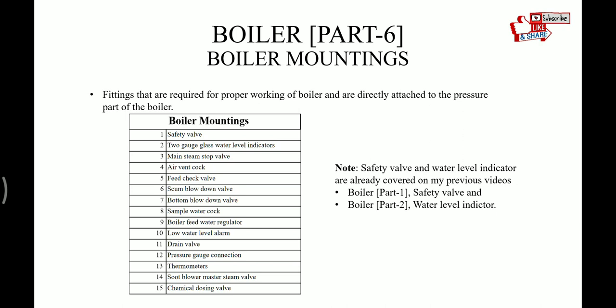Boiler mountings which are mounted on the boiler are safety valve, gauge glass water level indicator, main steam stop valve, air vent cock, feed check valve, scum blow down valve, bottom blow down valve, sample water cock, boiler feed water regulator, low water level alarm, drain valve, pressure gauge connection, thermometer, soot blower master steam valve, and chemical dosing valve.